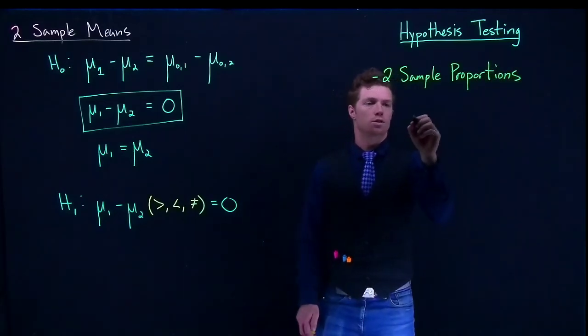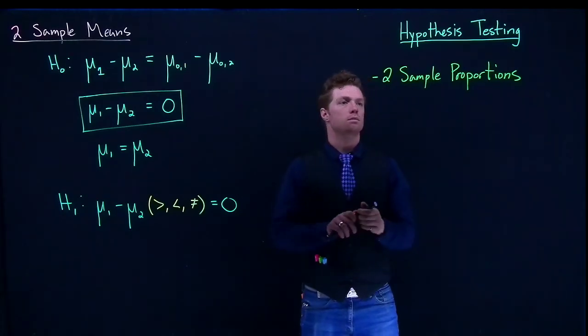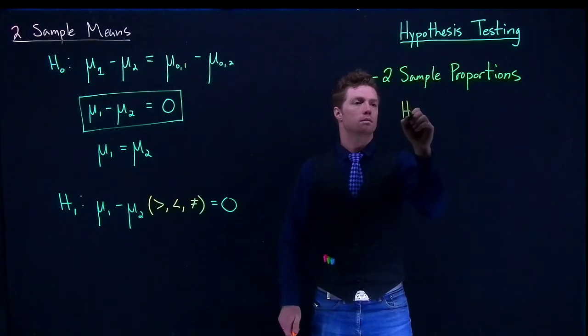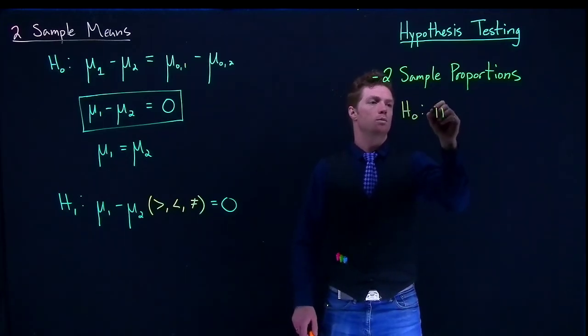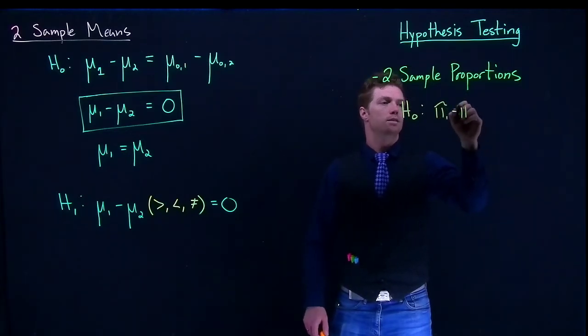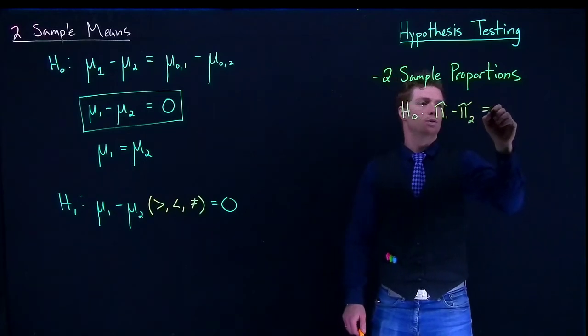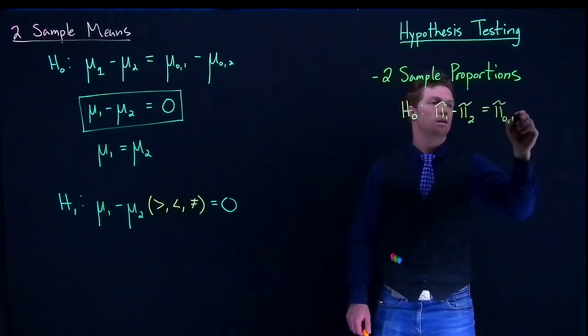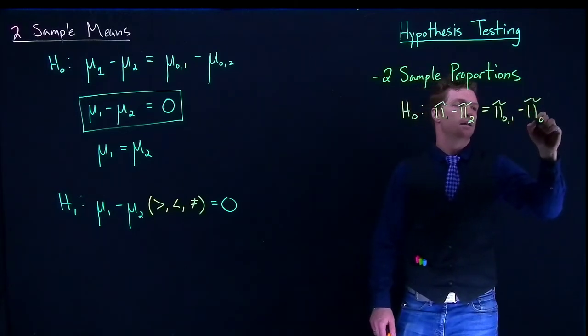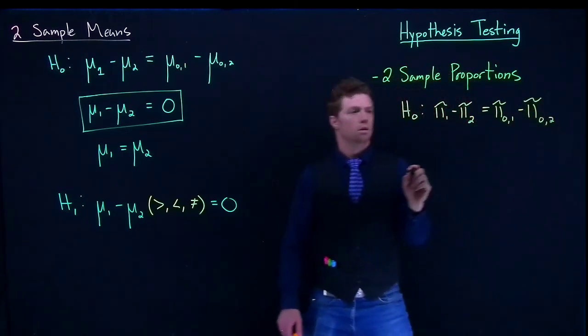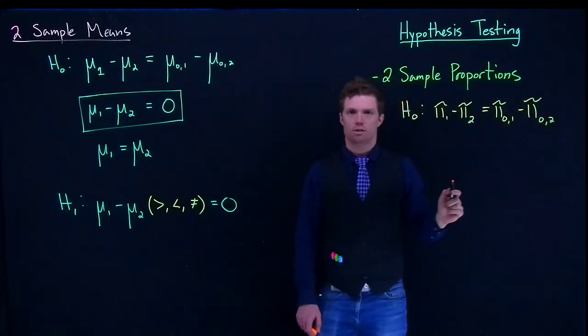So in two sample proportions, our null hypothesis is going to be this guy. So it's going to be pi one minus pi two is equal to pi naught one minus pi naught two, or that the true difference in proportions is equal to the hypothesized difference in proportions.